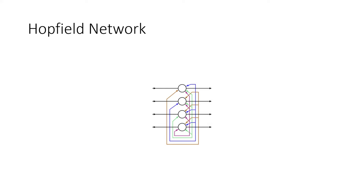Next we have the Hopfield network. A Hopfield network is a special type of RNN that is single-layer, as you can see on the screen, and in which the neurons are entirely connected — each neuron is associated with every other neuron. This was introduced in 1982 by John Hopfield to demonstrate memory collection and retrieval in the human brain.